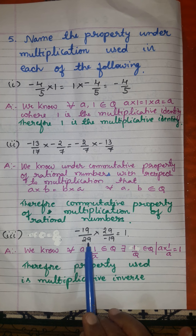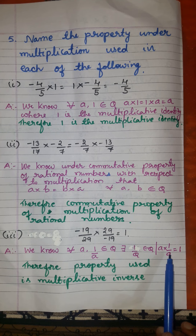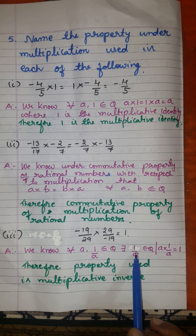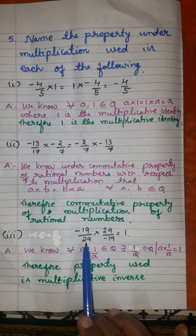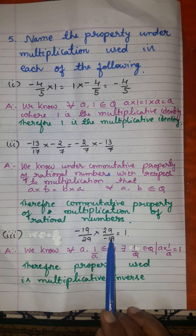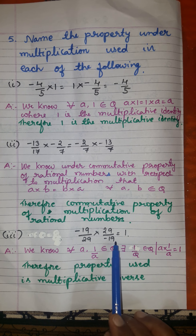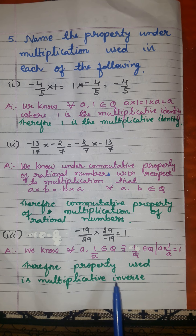Now the third sub-part: minus 19 over 29 into 29 over minus 19 equals 1. We know the general statement for the existence of multiplicative inverse — the inverse is equal to the reciprocal. For all A, 1 over A belonging to Q, there exists 1 over A belonging to Q such that A into 1 over A equals 1. When you multiply a given rational number by its reciprocal, you get the multiplicative identity 1. Therefore, the property used is multiplicative inverse.